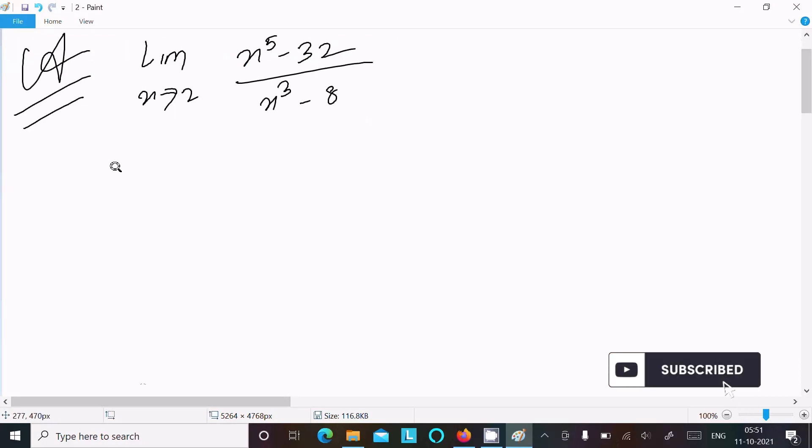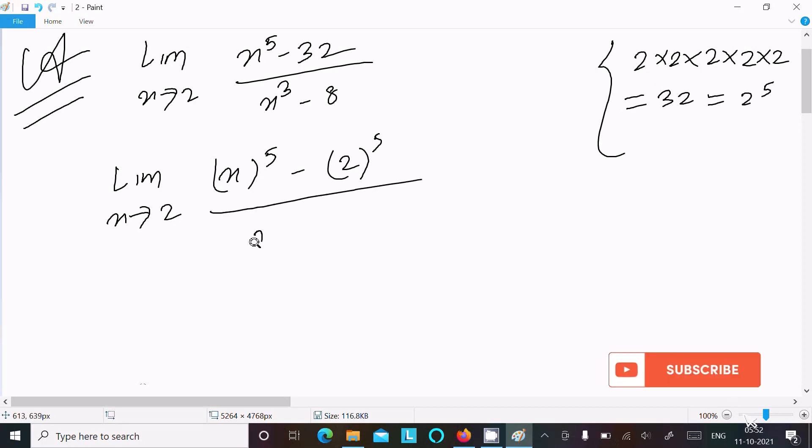After that, here writing limit x tends to 2. This x^5, this we can write as 2^5. So 2^5, 2 times 2 times 2 times 2 times 2, this is equal to 32, that is equal to 2^5. And here in the denominator, x^3, and this is equal to 2^3, 2 times 2 times 2, it's equal to 8, that is equal to 2^3.